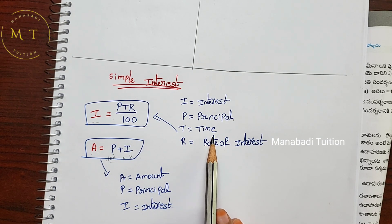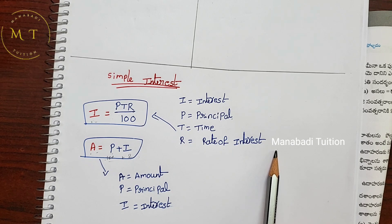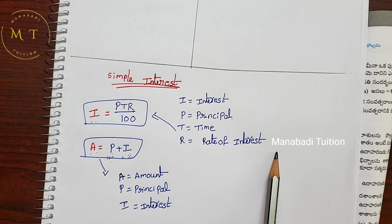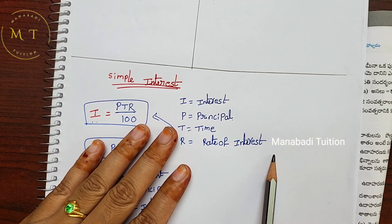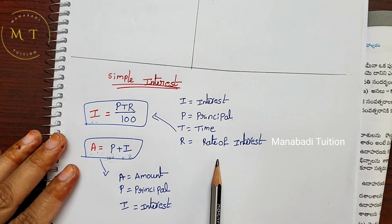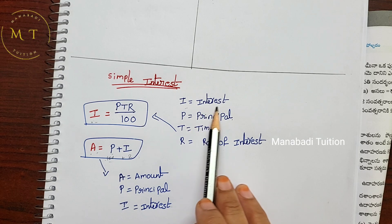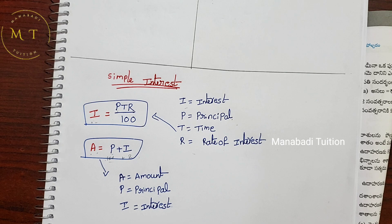Principal means the original money you lend. T means time — 1 year, 6 months, 1 month, etc. R means rate of interest — the percentage charged. I means interest; P is principal; T is time; R is rate of interest.